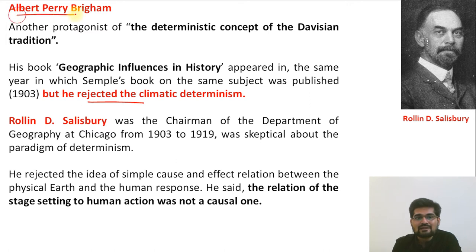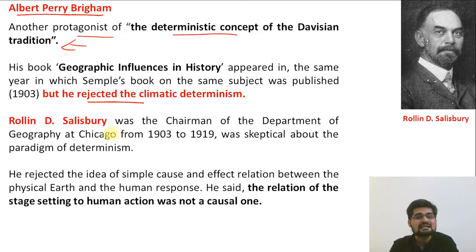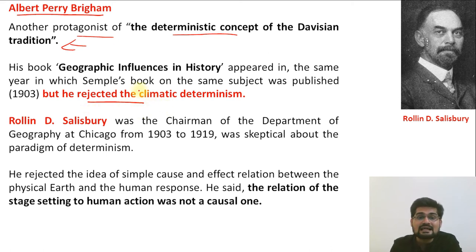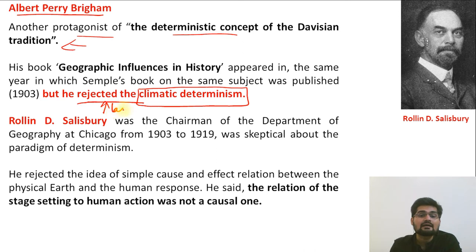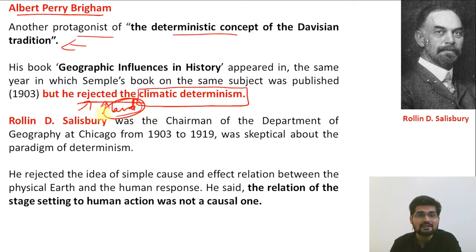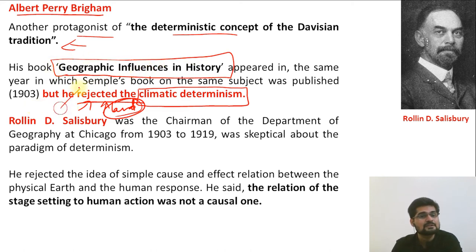Albert Perry Brigham was one of the protagonists of the deterministic tradition, but with a slight difference — he did not say that climatic determinism is the absolute truth. He rejected strict climatic determinism and instead talked about the determinism of land and landscape, the soil, and location. His work Geographic Influences in History was released at almost the same time as E.C. Semple's work, but while Semple's work talked about climatic determinism, his focused on landscape determinism.